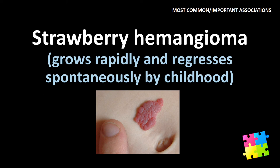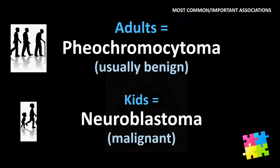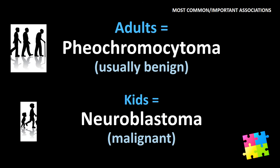Item 126: Tumor of the adrenal medulla — in adults: pheochromocytoma (usually benign); in kids: neuroblastoma (malignant).